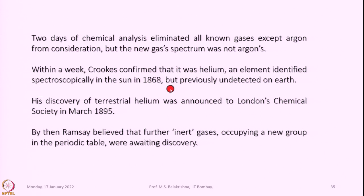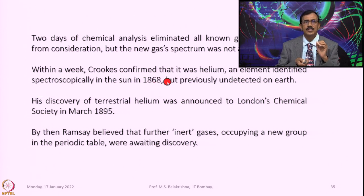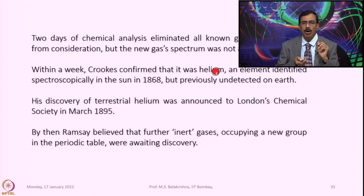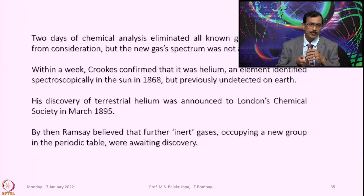Within a week, Crookes confirmed that it was helium — an element identified spectroscopically in the sun in 1868 but previously undetected on earth. His discovery of terrestrial helium was announced to London's Chemical Society in March 1895.